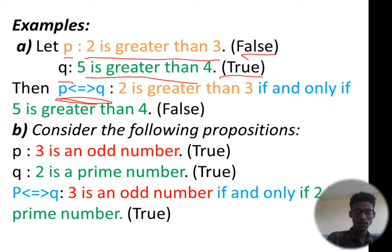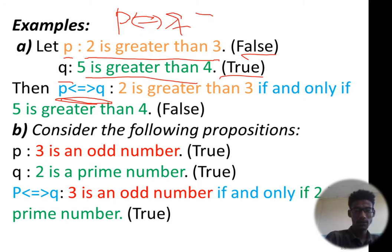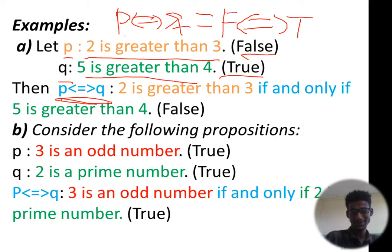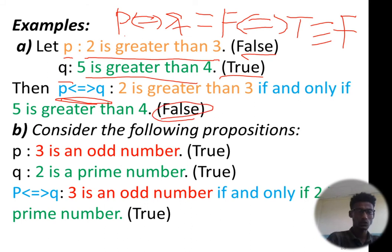We have a false. P implies Q, we have a false. These are false by implication. Q by implication — what is false? Has a false. In all cases, can we? We have a false.